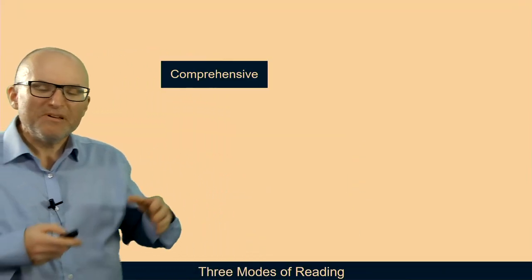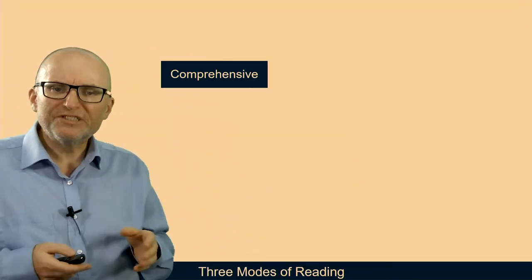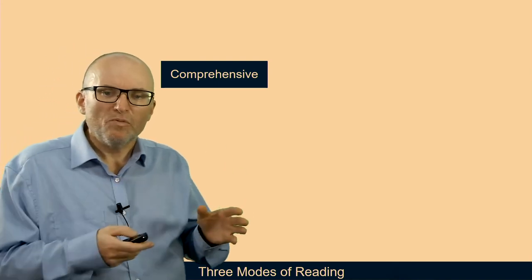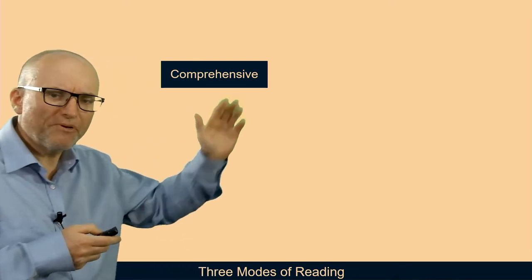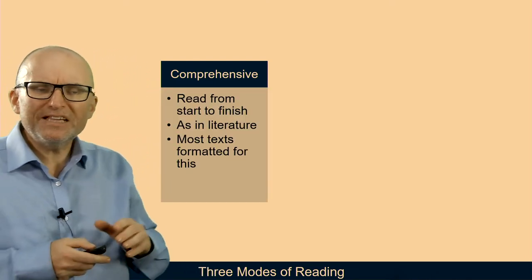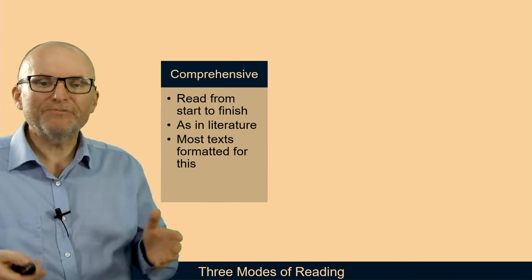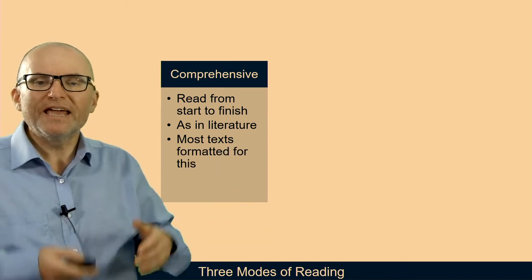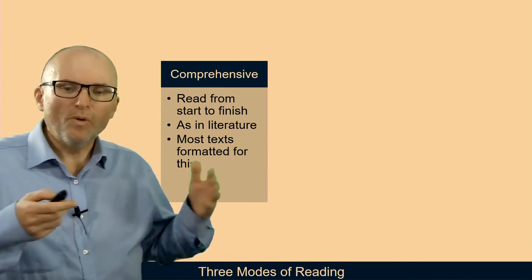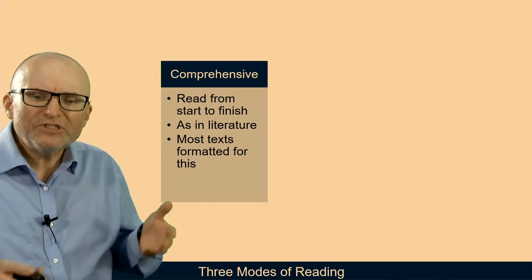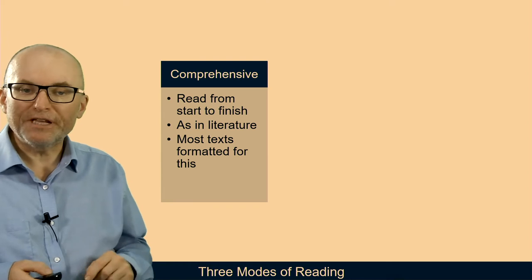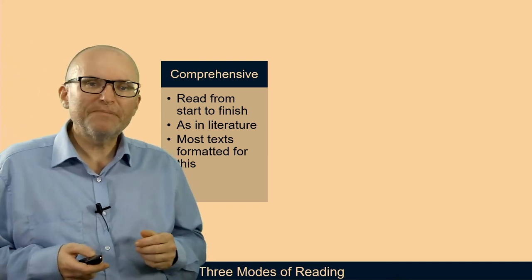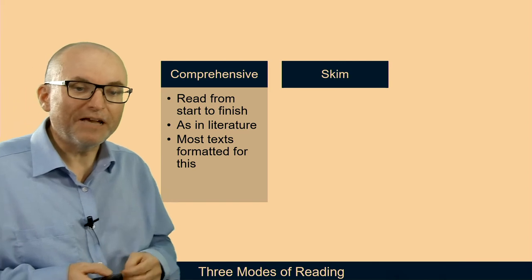Before we go on, I wanted to get us thinking about how people actually read so that we can format a document for the appropriate type of reading. So first there's a comprehensive reading approach, and that is the thing that we think about when we think reading. That's when you read from start to finish as when you're reading a novel or a short story. And most texts are really formatted and written in a way that assumes that kind of reading. But that is actually not the way that people always read, or maybe not even most of the time.